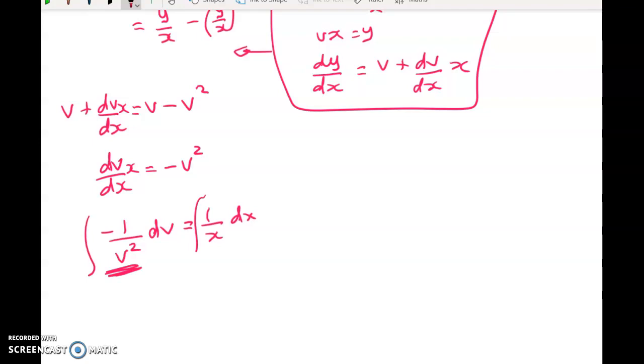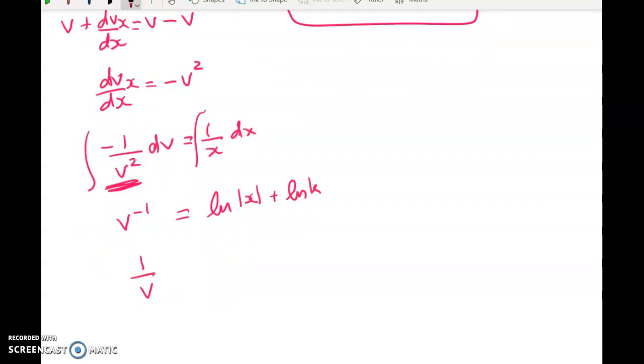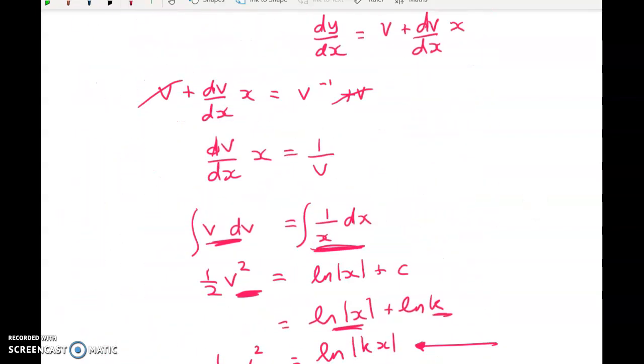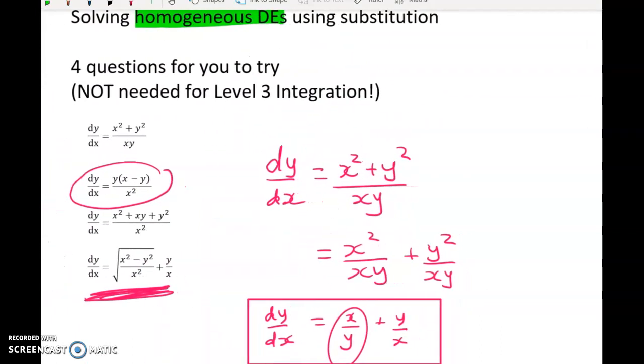So V to the negative one is equal to the natural log of x plus natural log of K. So one over V is equal to the natural log of Kx. And one over V is just x over y. So x over y is equal to this. And that gives me a final general solution of y is equal to x over the natural log of Kx. So that's question two done. And we've still got eight minutes left. If anyone is out there watching, I'm going to do questions three and four.